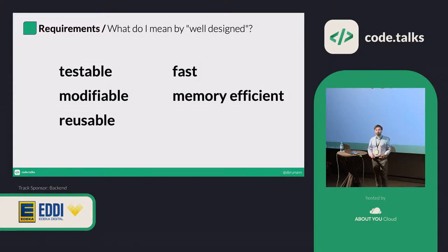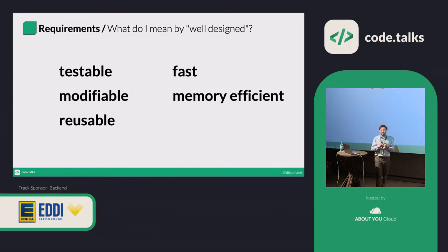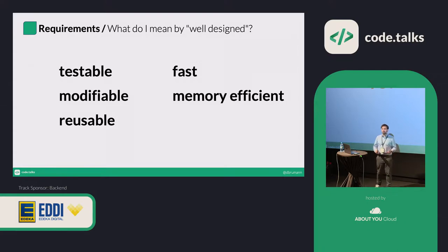When I say I want to show you well-designed imports, I should tell you what 'well designed' means to me. On the code side: I want it to be testable — preferably unit testable, or at least functionally testable. I want it to be modifiable — small enough to grasp and easily changed — and replaceable, so I can swap classes and things still work. I also want reusability: a generalized solution with project-specific code minimized to a small area.